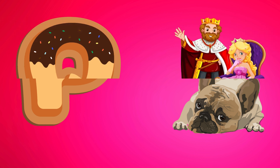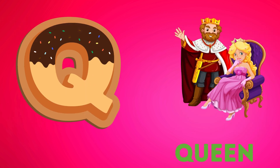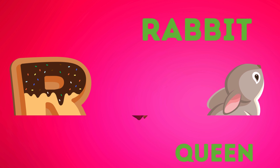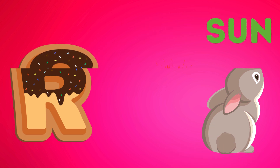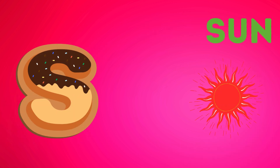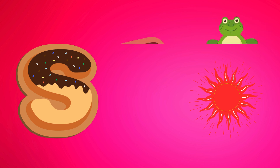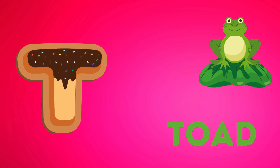Q is for queen, k-k-queen. R is for rabbit, r-r-rabbit. S is for sun, s-s-sun. T is for toad, t-t-toad.